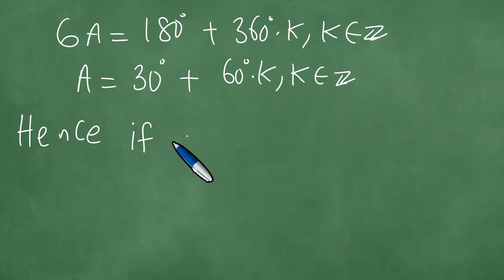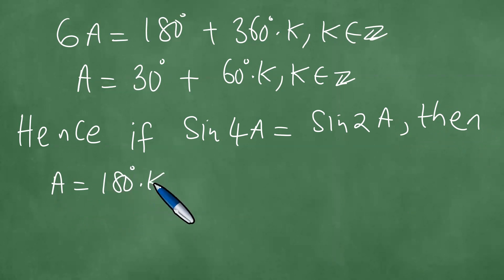If we have sin(4A) equals sin(2A), then we have that A is equal to 180 degrees times k, where k is in Z, or A is equal to 30 degrees plus 60 degrees times k, where k is in Z.